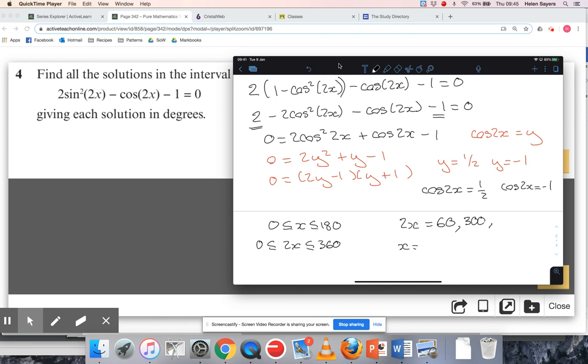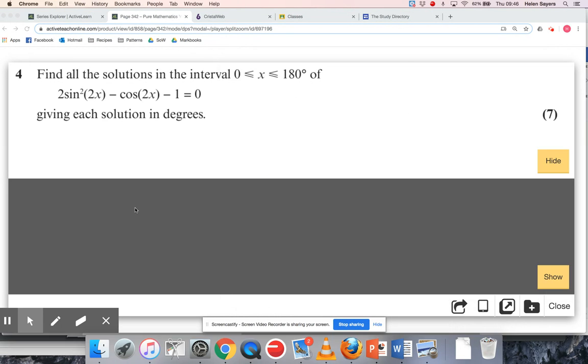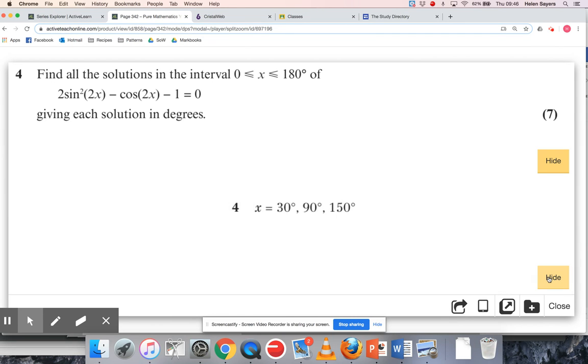So if I look at the minus 1, I get cos 2x is 180. And my next solution after that would be 540, so that's going to be too large. So if I halve each of those to get my values of x, let's just double check, hopefully, those are the only three solutions. Brilliant.